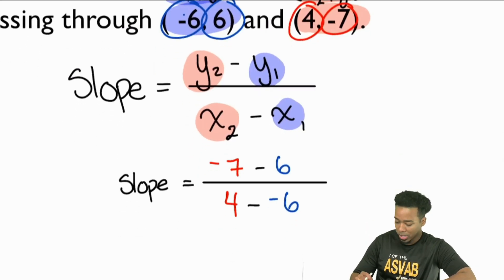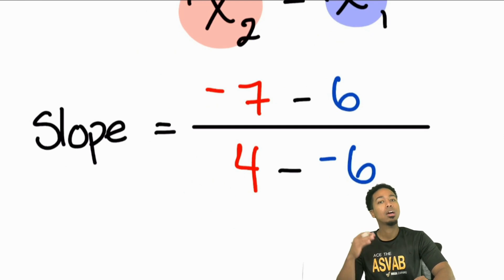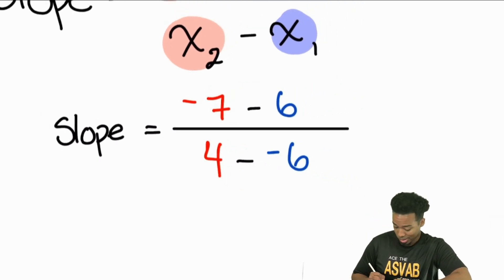So notice how we have a double negative. Everyone, a double negative is the same as doing what? A double negative is the same as adding. Exactly. A double negative is the same as adding. And so therefore, this is all we got. Nice and easy. Watch this.